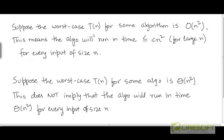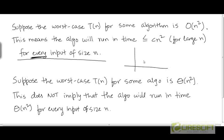Suppose that the worst case running time for some algorithm is O(n²). This implies that the algorithm is going to run in time less than or equal to c times n² for all large values of n, for some constant c greater than 0, for every input of size n. If the worst case running time is bounded from above by c times n², then the running time for every single input of size n is going to be bounded from above by c times n².